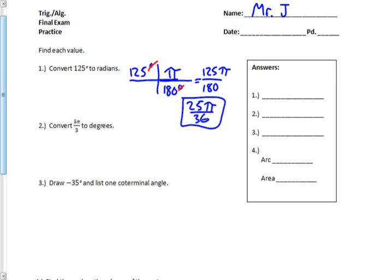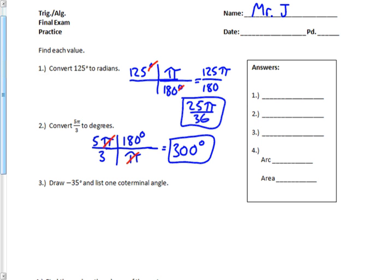The next one asks me to convert to degrees. I'm going to do the same thing — set up some factor label. I've got this in terms of radians, so I need radians to degrees: every pi radians there's 180 degrees. My units cancel, my pi's cancel, I just have 5 times 180 divided by 3, and that gives me 300 degrees. And that's it.